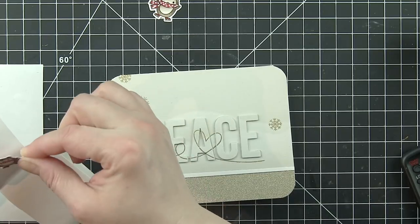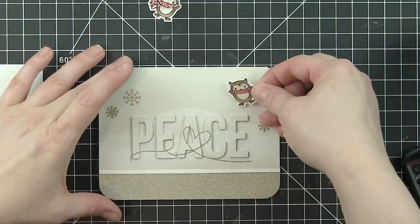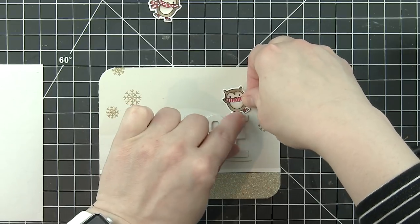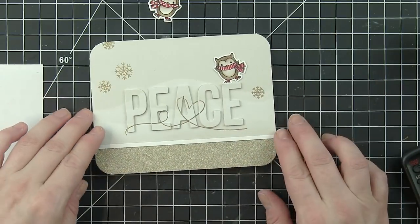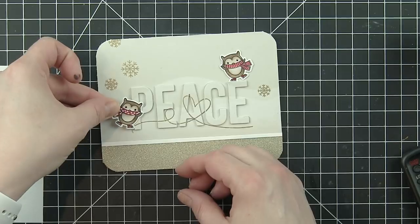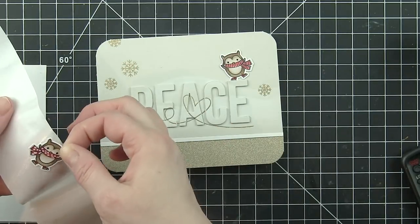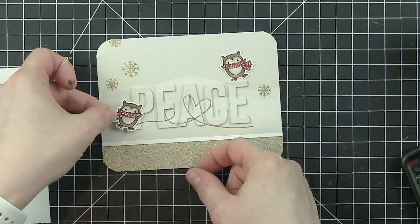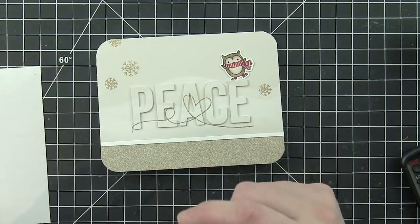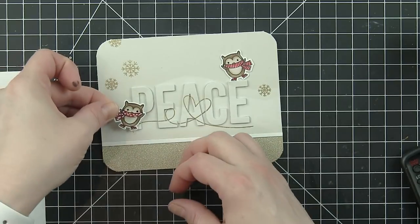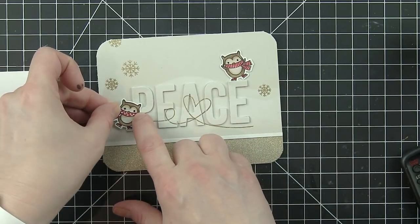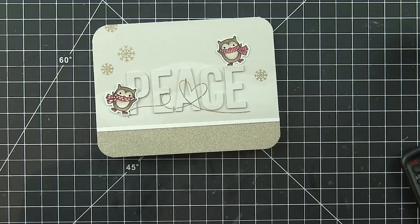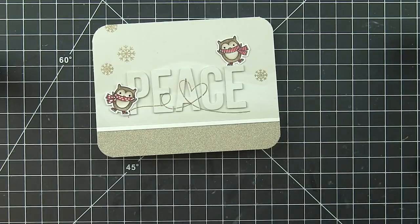For the owl on top of the letter E, I'm simply going to adhere this one directly to the card base using some glue dots. So it looks like it's standing on top of the letter E. I'll add one glue dot to the right side of the owl that overlaps the letter P, and then a little foam adhesive square to the left side. And that's going to make that owl popped up just a little bit so it lays flat and it looks perfect with the rest of the background.